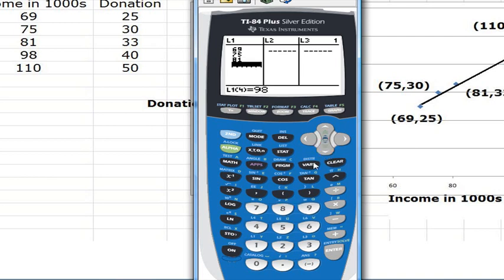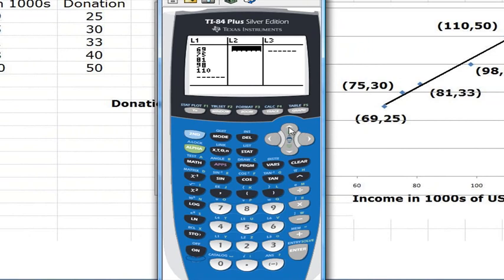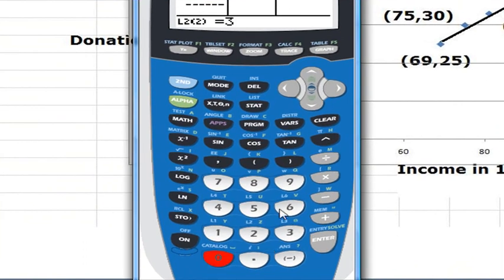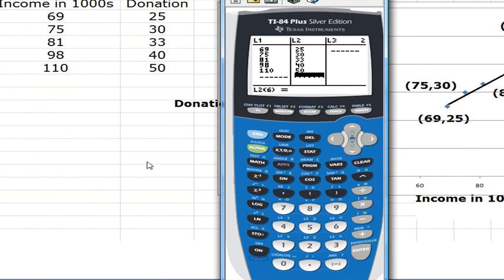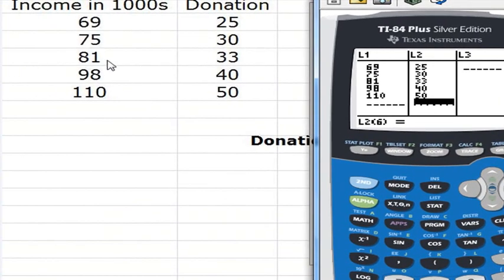Then we have 110. And then the y values are 25, then we have 30, 33, 40, and 50. So we have all the values entered. Let's quickly check that we didn't make any data entry mistake. Doesn't look like we did.